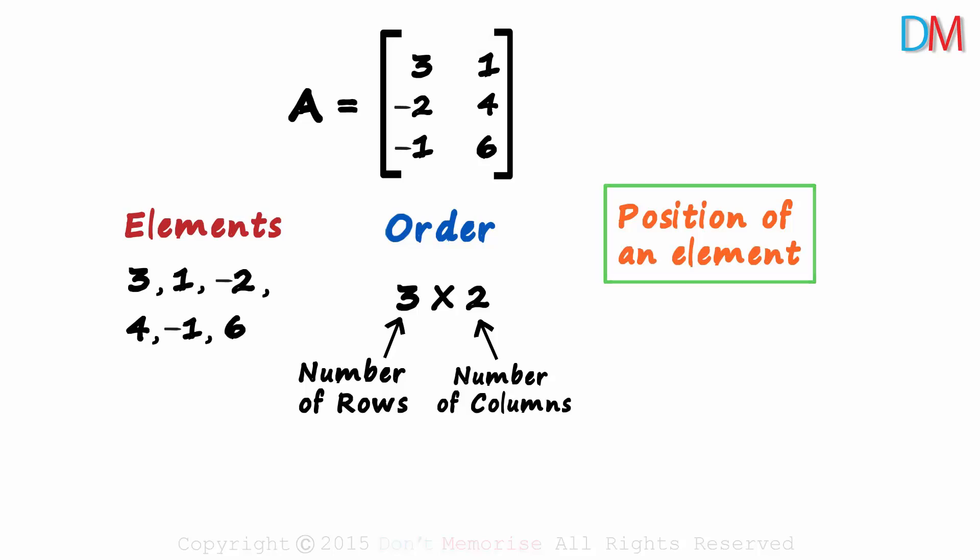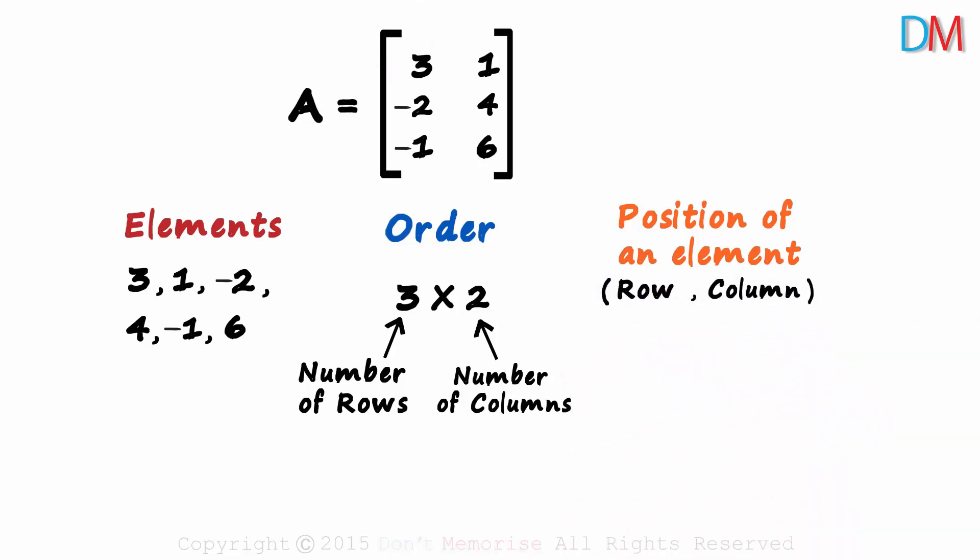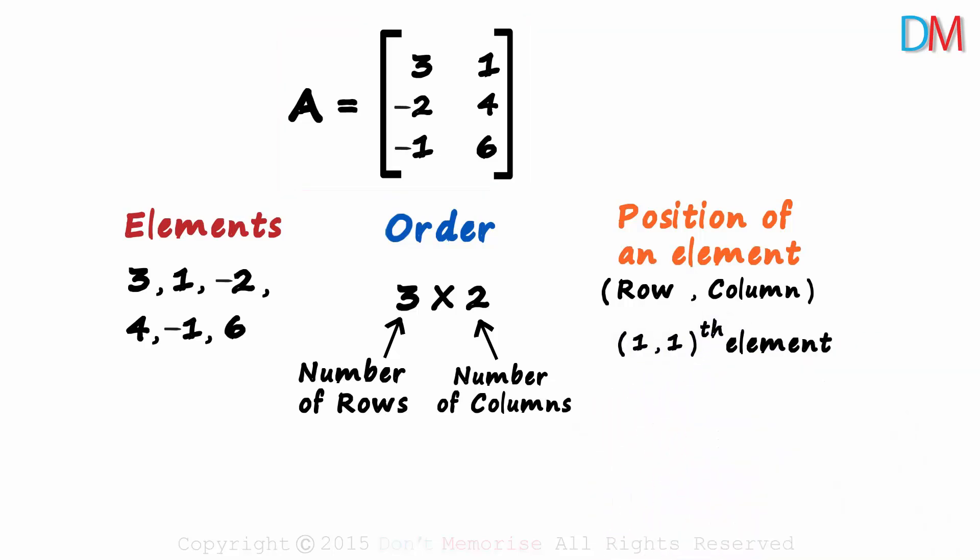Next, we come to the position of an element. Every element in a matrix has a unique position. But how do we define the position of an element? It's easy. We look at the row in which it is placed and then the column. Yes, row, column. So in this matrix A, what will be the one, one-eth element? What does one, one mean in this context? First row and first column. This is the first row and this is the first column. Three is the one, one-eth element.